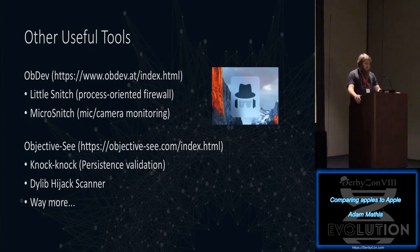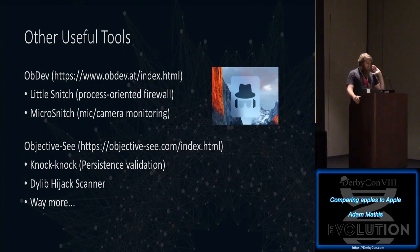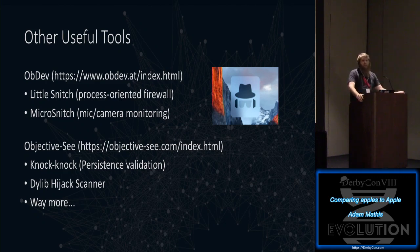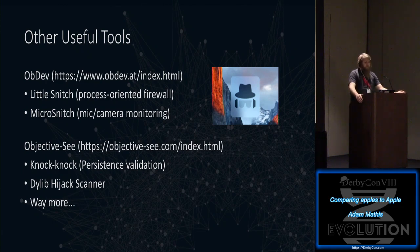OBDev's Little Snitch is probably the most popular Mac firewall — process-oriented, so any process making a new network connection prompts the user. Micro Snitch monitors your microphone and camera, alerting you if either goes active unexpectedly. From Objective-C, Patrick Wardle's dylib hijack scanner and KnockKnock are great tools — KnockKnock checks cron jobs and other persistence mechanisms.